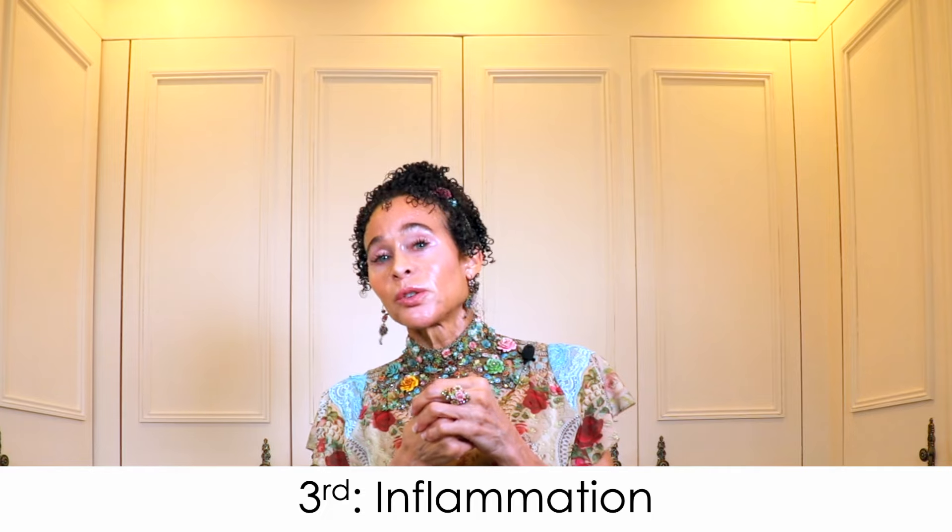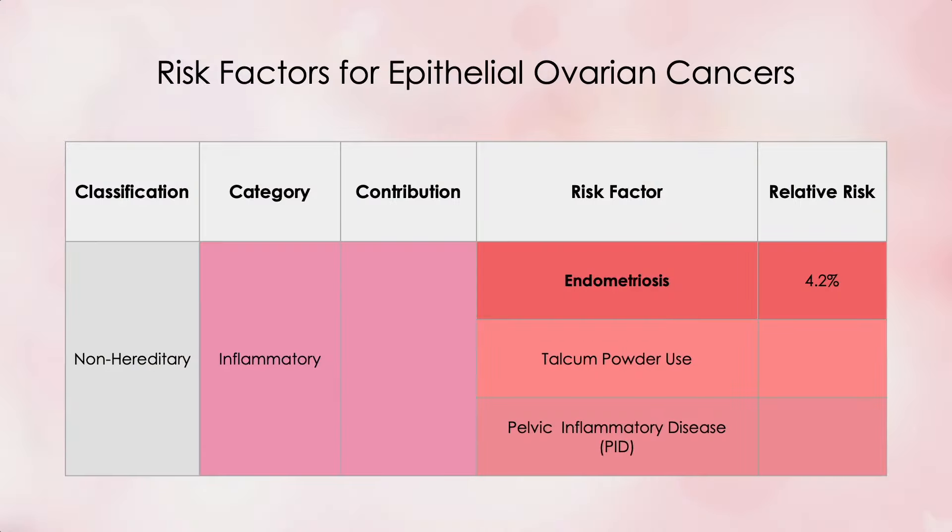The third category of risk factors that includes endometriosis is inflammation — here it is listed along with talcum powder and pelvic inflammatory disease on our isolated chart. But wait: inflammation is an actual step in the sequence of events in how endometriosis develops. So inflammation is both a risk and a result — that means this designation as an inflammatory risk factor is somewhat redundant. If endometriosis is a risk factor for epithelial ovarian cancer in three different ways, could it be that it's really a precursor to cancer, or even a pre-cancer? Let's explore this possibility.